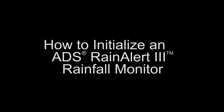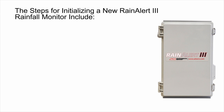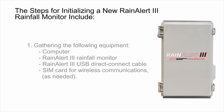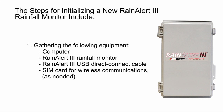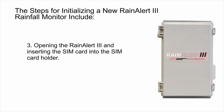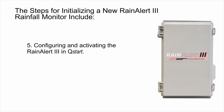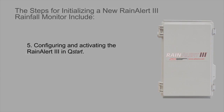How to Initialize an ADS Rain Alert 3 Rainfall Monitor. The steps for initializing a new Rain Alert 3 Rainfall Monitor include: gathering the required equipment, a computer, a Rain Alert 3 Rainfall Monitor, a Rain Alert 3 USB Direct Connect cable, and a SIM card for wireless communications as needed; connecting the USB cable to the computer and downloading the driver if necessary; opening the Rain Alert 3 and inserting the SIM card; plugging in the USB cable; and configuring and activating the Rain Alert 3 in QStart.